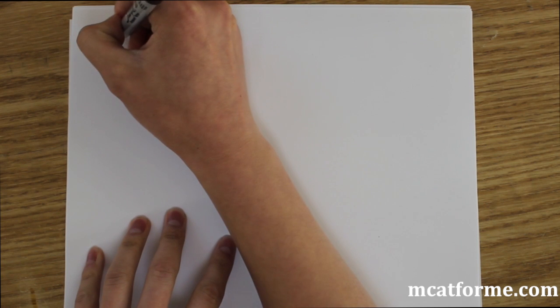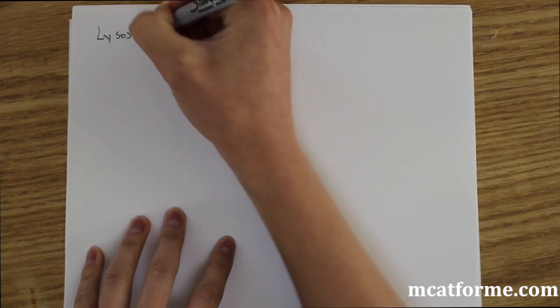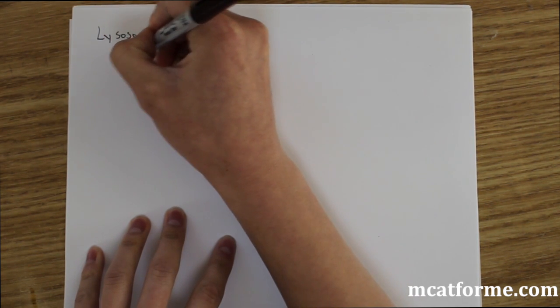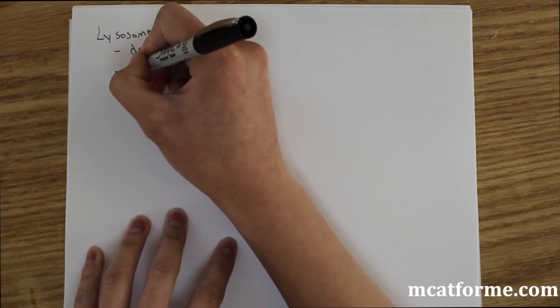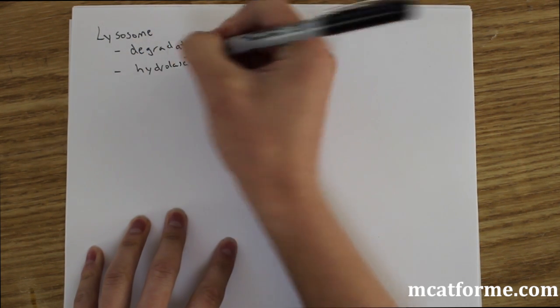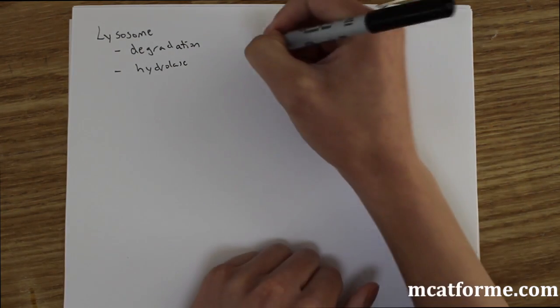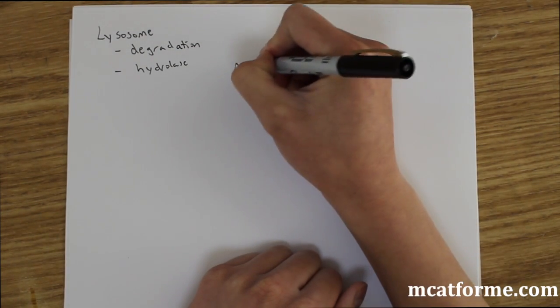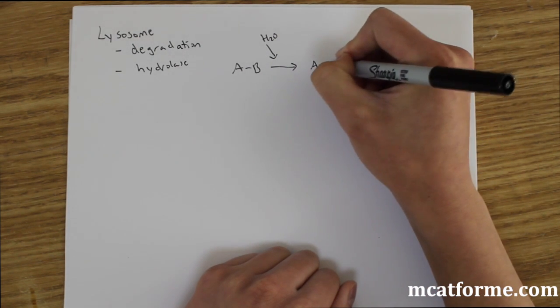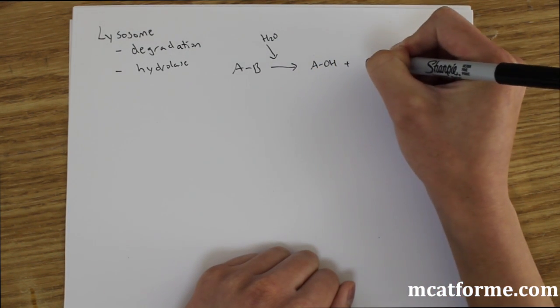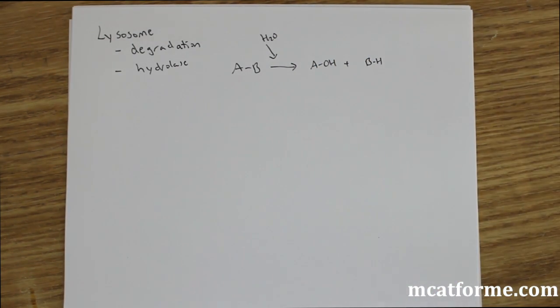The next one we're going to be looking at is the lysosome. Lysosome is used for degradation, and this is enzymatic degradation by using hydrolase. So hydrolase uses H2O. What happens is it uses H2O to break a bond. That's what a hydrolase does. It breaks a bond using water.